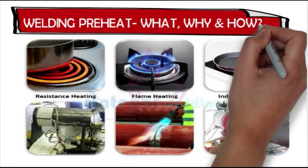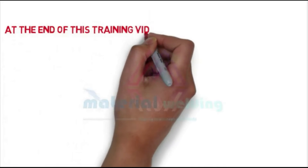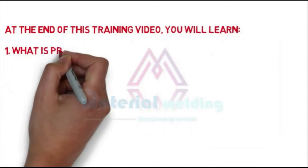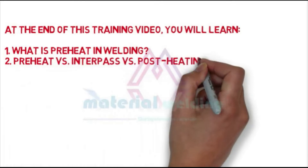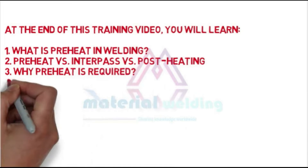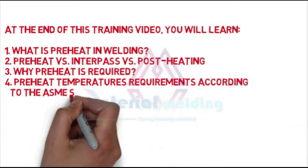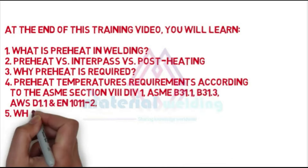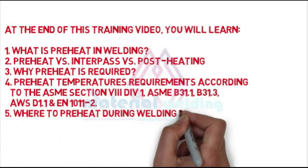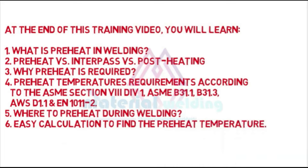What is it, why is it done, and how is it done? At the end of this training video, you will learn: Preheat vs Interpass vs Post-Heating in Welding, why preheating is required, preheat temperature requirements as per codes ASME Section 8 Division 1, ASME B31.1, B31.3, AWS D1.1, and EN 1011-2, as well as where to preheat during welding and an easy calculation to find the preheat temperature.